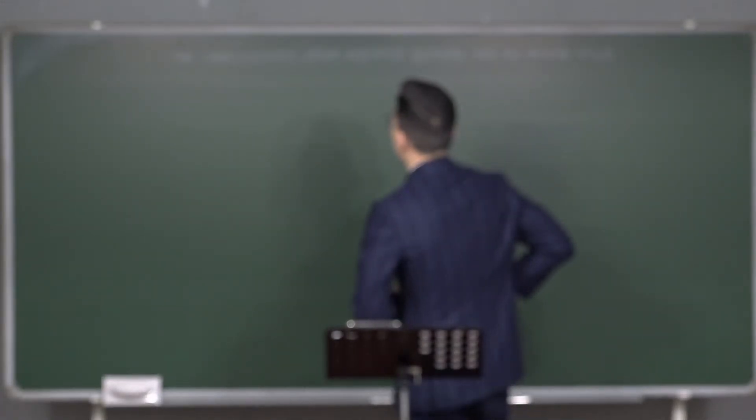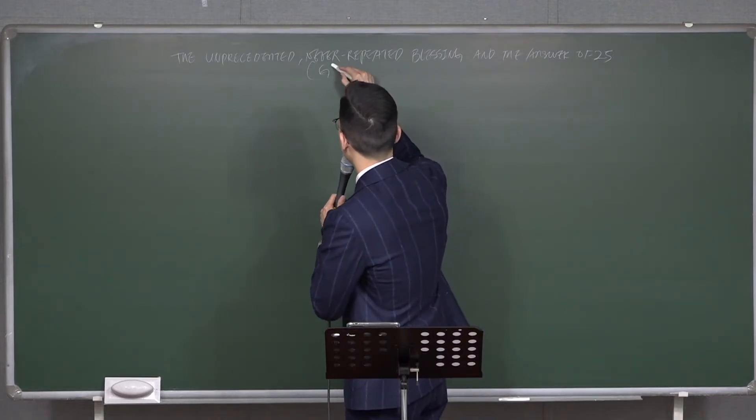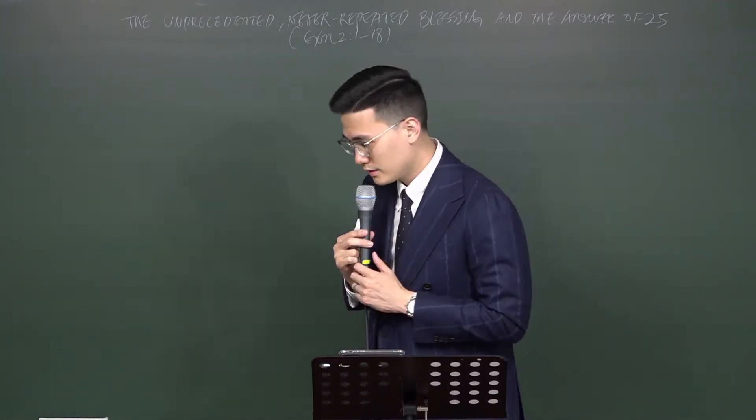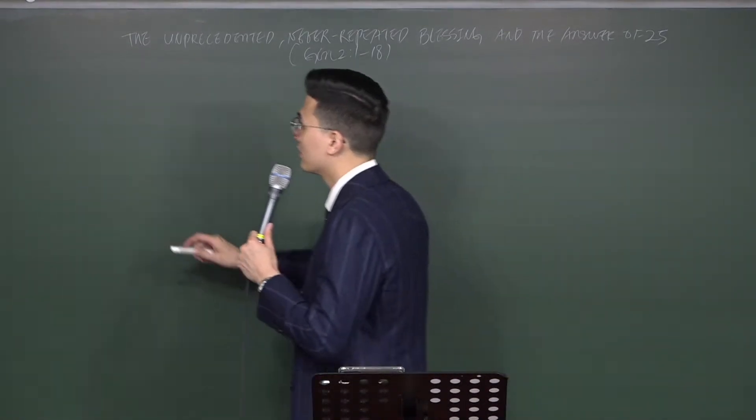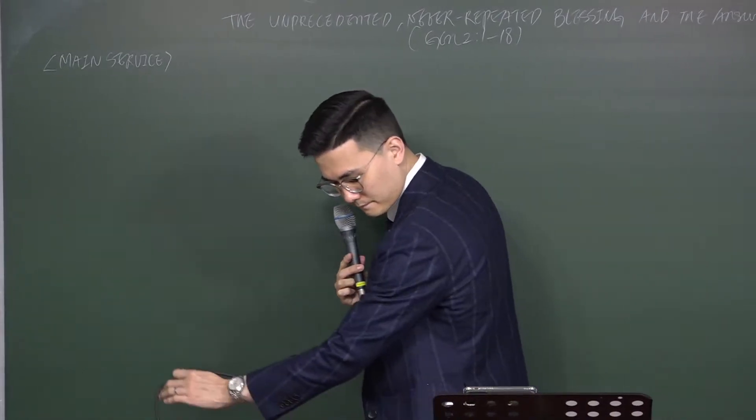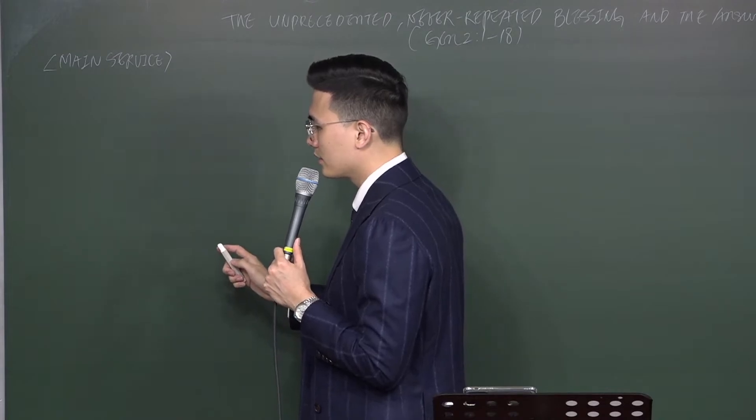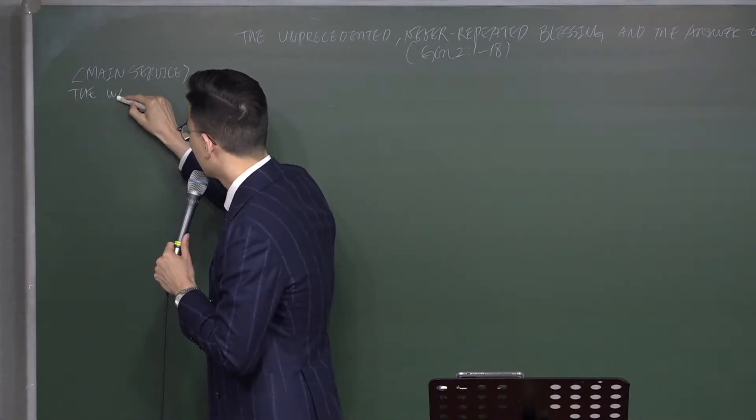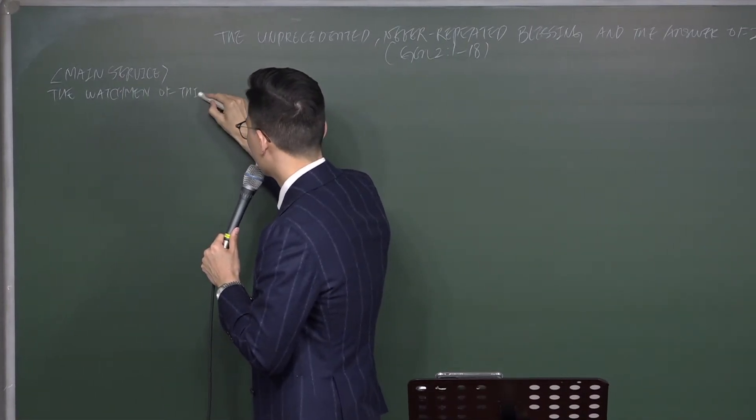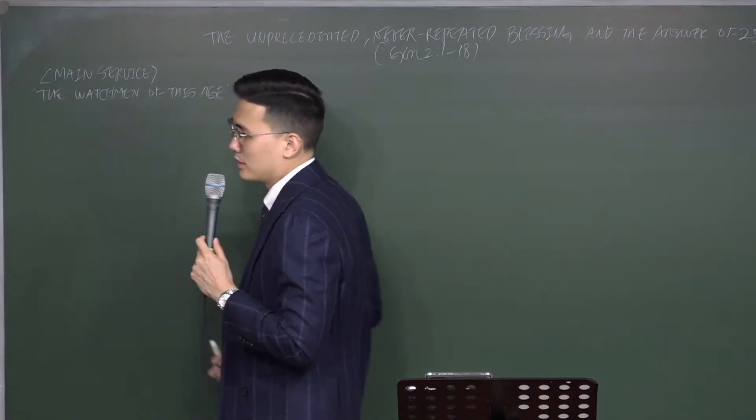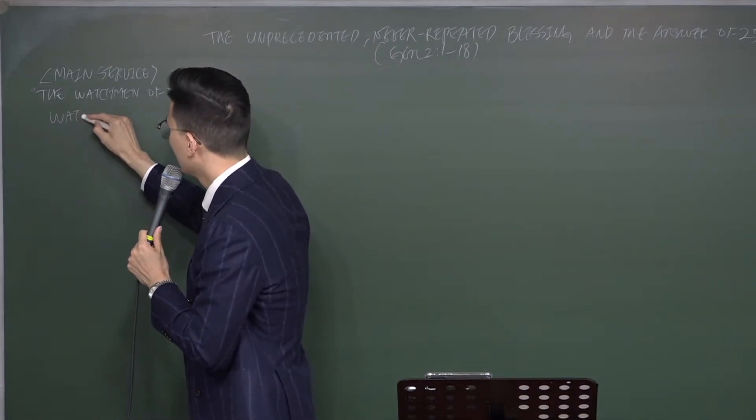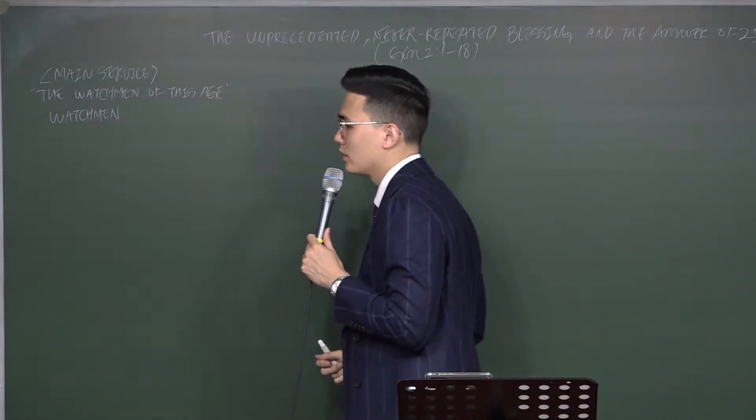We read Genesis chapter 2, verse 18, but it was from verse 1 to 18. Today's main service title is the watchman of this age. The watchman of this age. Why? Because you are called as a watchman. That's why you have light.